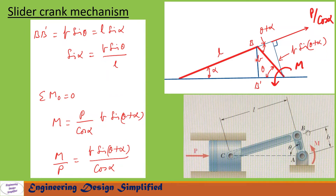Let us redraw this diagram. Here is the coupler and here is the crank. Let us draw a line from B down to the horizontal line and call that point B′. This gives us a vertical line, forming a triangle. In this triangle, side BC (the coupler) has length l, this angle is alpha, the crank side has length b, and this angle is theta.